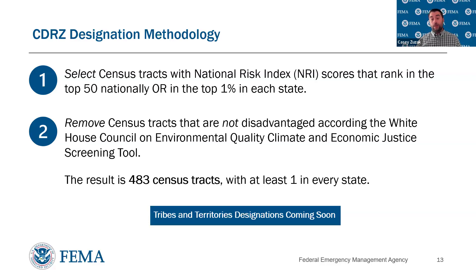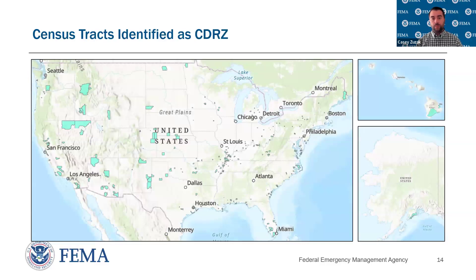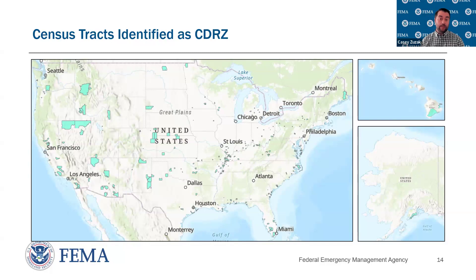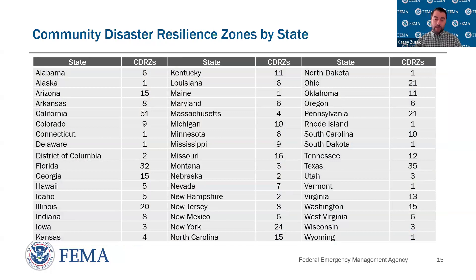We don't have the same data available in the territories — unfortunately we don't have community resilience data to support those communities, so we're taking a slightly different approach for them. Census tracts come in all different shapes and sizes because it's a population-based unit of geography — some are hundreds of miles across, others may be a city block. This map displays census tracts across the country; some are easy to see and some are just gray specks. We are really focused on census tracts because that's what the law tells us to do.